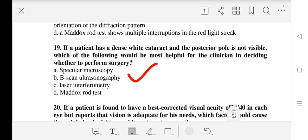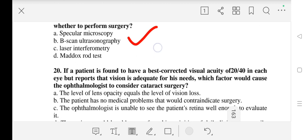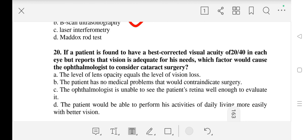Question number 20: If a patient is found to have a best corrected visual acuity of 20/40 in each eye but reports that vision is adequate for his needs, which factor would cause the ophthalmologist to consider cataract surgery? The correct answer is C - the ophthalmologist is unable to see the patient's retina well enough to evaluate it.